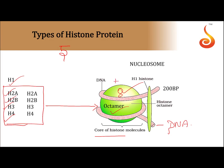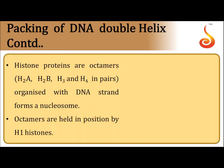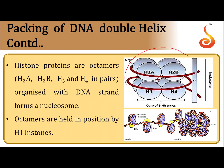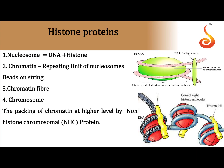Negatively charged DNA tightly attaches to the positively charged histone octamer to form the nucleosome. The nucleosome is made up of DNA and histone protein. These octamers are held in position by Histone 1 protein, which is otherwise called the linker protein.